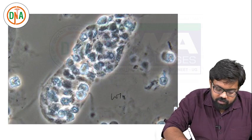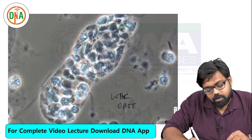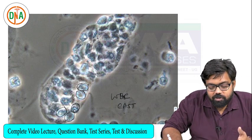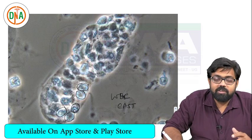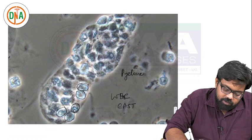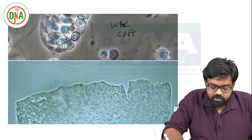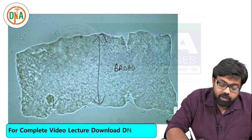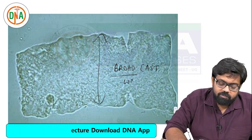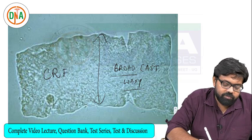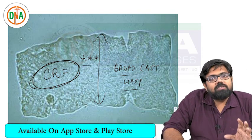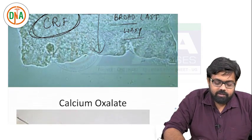A WBC cast means normal protein with WBCs studded along it, which is more in favor of tubular inflammations like pyelonephritis. Comparing this cast with the next one - it is looking much wider with sharp angles. This is called a broad cast or broad waxy cast, which is characteristic of and specifically seen in chronic renal failure. This has been asked repeatedly as an MCQ. This larger-dimensioned cast seen in chronic renal failure is called a broad cast or waxy cast.